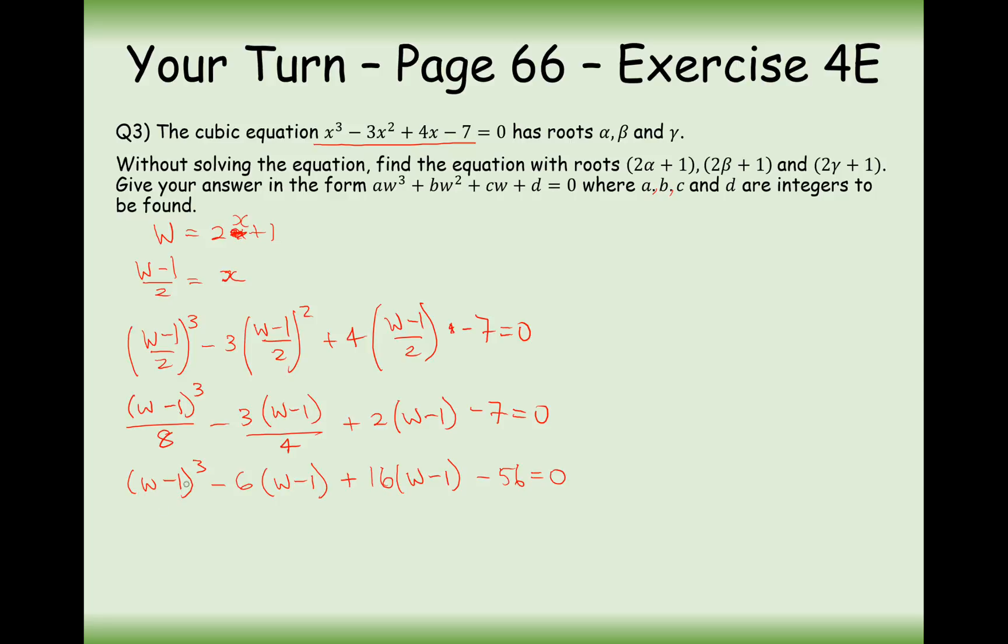Alright then, so the next thing to do will be to expand this cubic expression here. So it's going to be w cubed minus 3w squared plus 3w minus 1 minus 6w. Whoops, I missed the squared off of this term here. So 6w squared. And then it's going to be minus plus 12w minus 6 plus 16w minus 16 minus 56 equals 0.